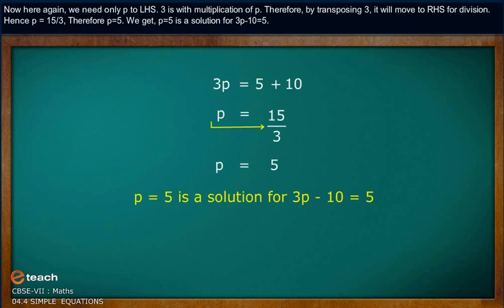Therefore, p equals 5. We get p equals 5 is the solution for 3p minus 10 equals 5.